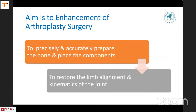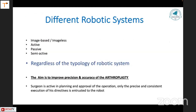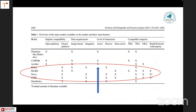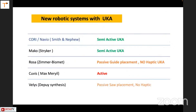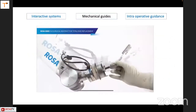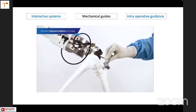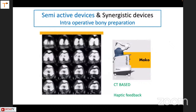The aim is to enhance arthroplasty surgery: precisely prepare bone, place components, and restore limb alignment and joint kinematics. We have different types of robots — active, semi-active, and passive devices. Currently we have closed platforms that are image-based. Only three systems present now for UKA: Rosa, Mako, and Navio. Cori also has UKA in its profile. The Rosa is an interactive mechanical guide providing intraoperative guidance — it does not cut, it guides the surgeon.